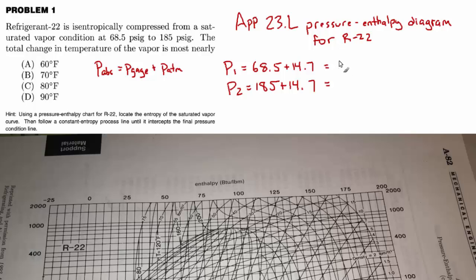And P2 equals 185 plus 14.7. P1 is 83.2 PSIA. And P2 is 199.7 PSIA. And to identify any point on a refrigeration diagram, we need to know two things about that state. So for state one, we know the pressure. And the other fact that we have is that it's a saturated vapor. So we're going to find it right on the outside of this curve, on the right side where the saturated vapor is.